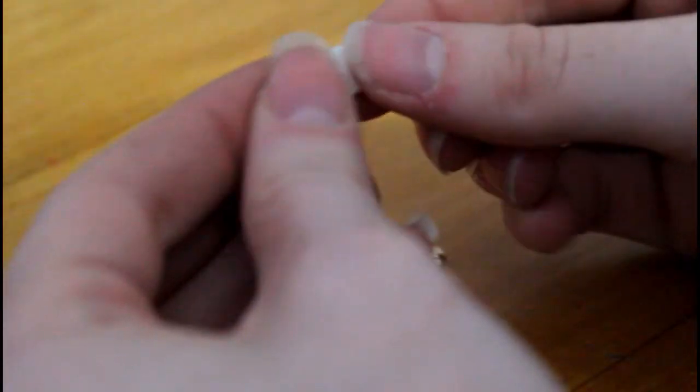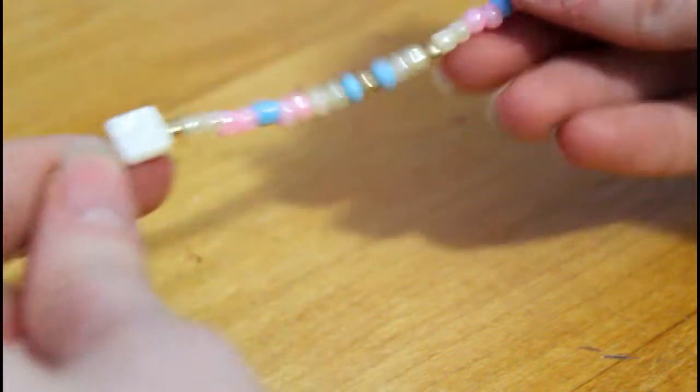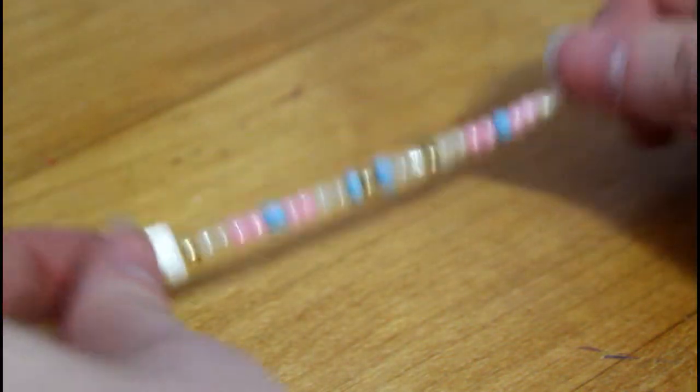So I tied the end of some stretchy cord looped it through and then that little center thing you can make something for that but I just decided to go with this little bead you can try and make one out of hot glue to get it closer to what hers looked like but this is what I went for and then I did the exact same thing on the other side and just tied it all together.